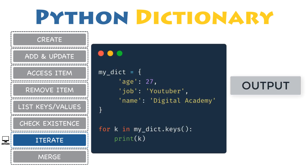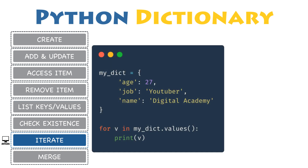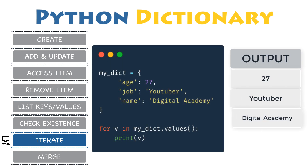If you just need to work with the keys of a dictionary, use the keys() function, which returns a new view object containing the dictionary's keys. On each iteration, the current item will only be the key, not its associated value. If you use a dictionary in a for loop, it traverses the keys by default. You can also use values() to iterate through only the values; on each iteration, the current item will only be the value, not its associated key.